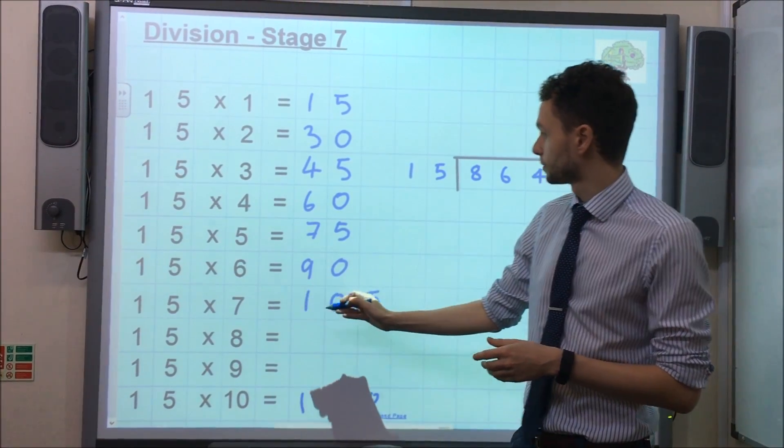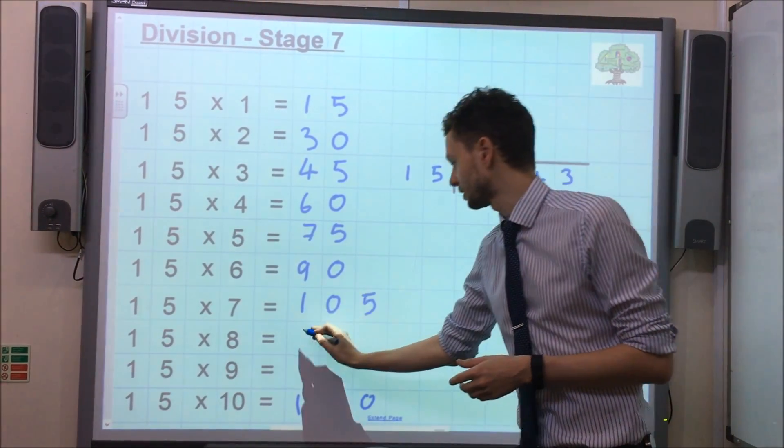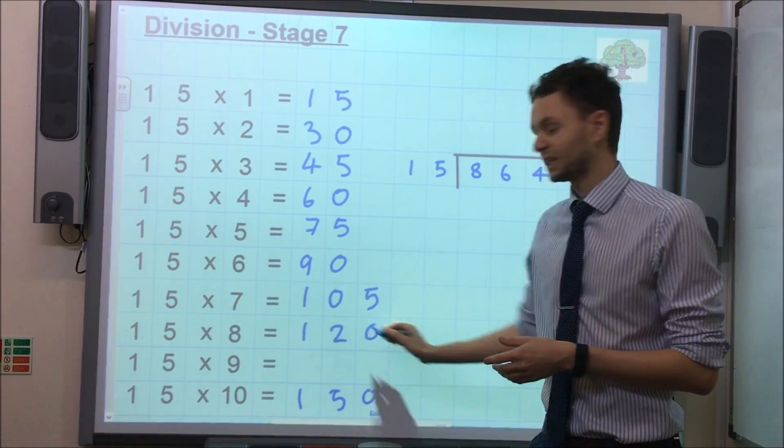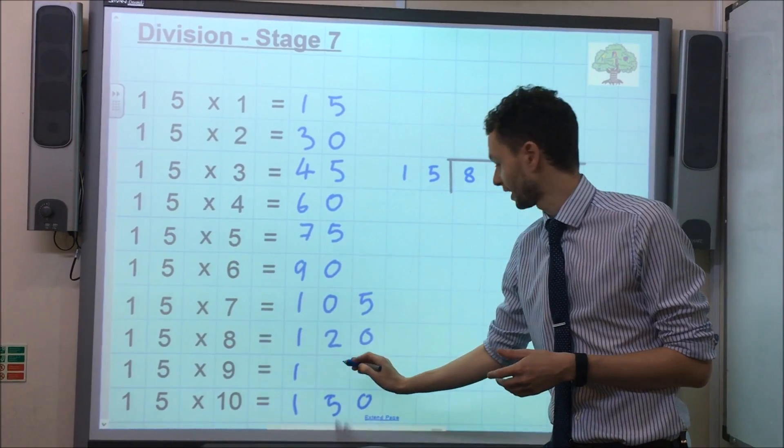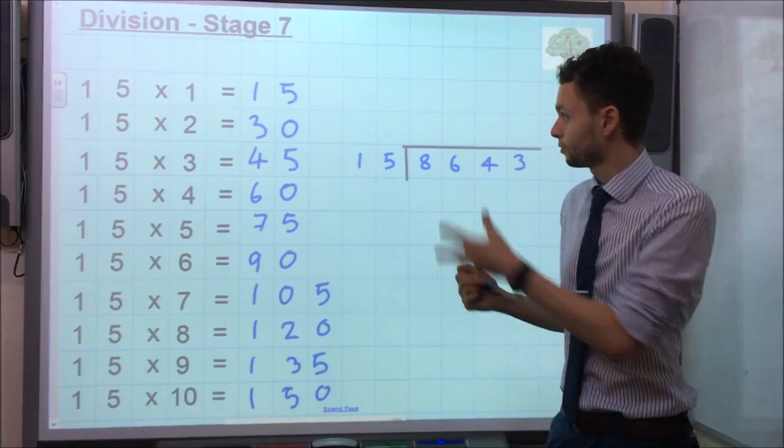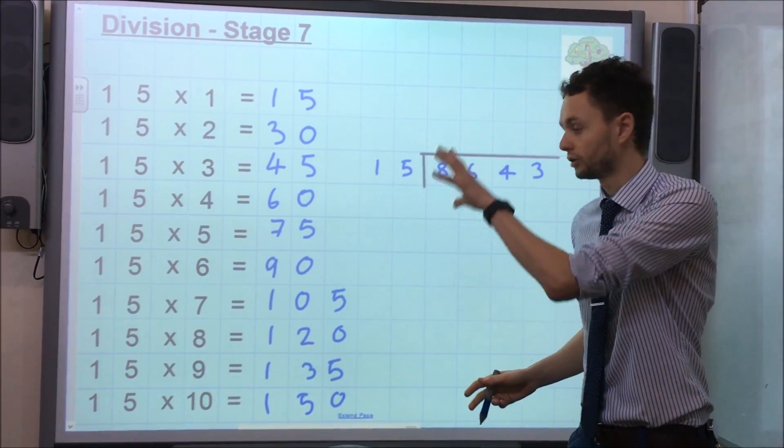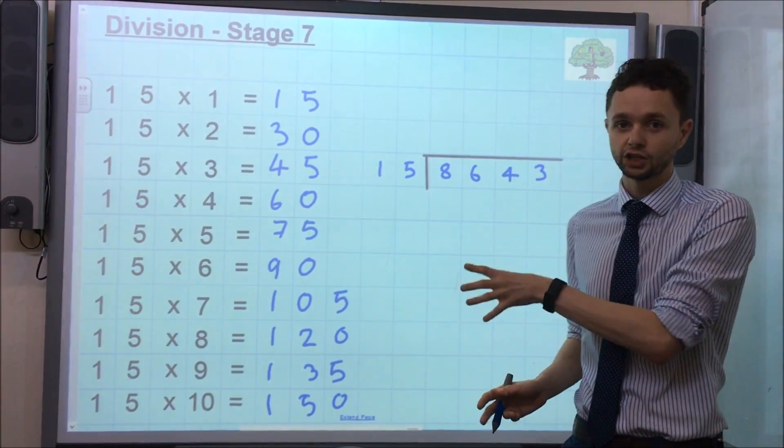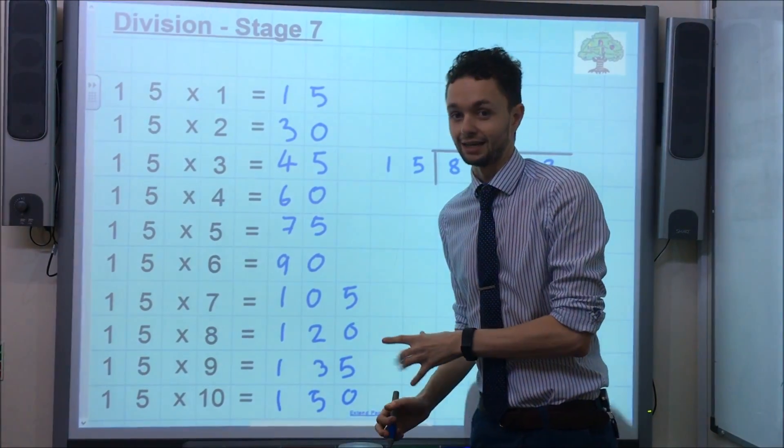Then 15 times by 8, we just double 15 times by 4, double 60, which is 120. And then again, 15 times by 9, we just add on 15 to the previous answer, which gives us 135. So there you have it, we've got our 15 times table and that only took about 30 seconds, which means we're ready now to solve the calculation and we've got all the answers we're going to need.